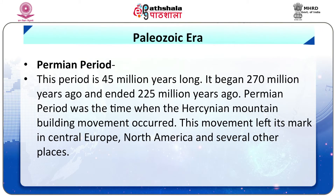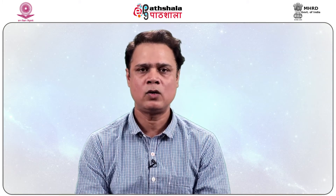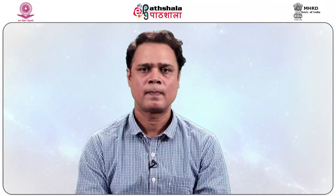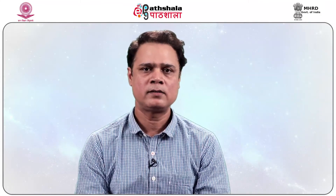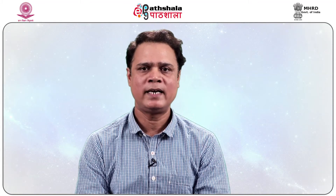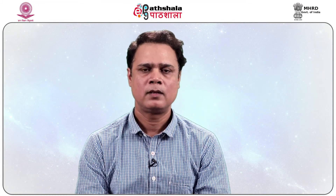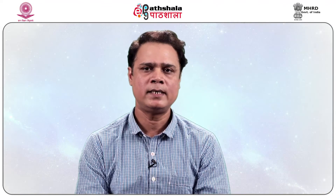The Permian period is 45 million years long. It began 270 million years ago and ended 225 million years ago. The Permian period was the time when the Hercynian mountain building movement occurred. This movement left its marks in Central Europe, North America and several other places. There was a heavy deposition of red rocks and limestone in the southwest USA. Animals which could live both on land and sea evolved further, and reptiles saw the light of day. The temperature began to rise and the climate started getting dry in this period.